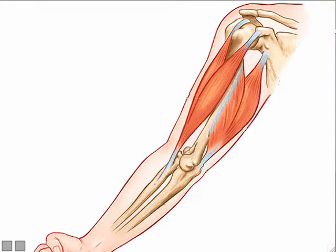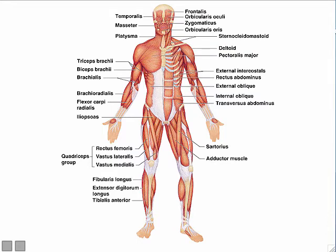In your anatomy class, you learned the names of lots of muscles — all of those are skeletal muscles: triceps, biceps, brachialis, pectoralis major, deltoids, frontalis, masseter, quadriceps, gastrocnemius — all skeletal muscles. Another thing about skeletal muscles is they are voluntary muscles, meaning you consciously choose when they contract and relax. Skeletal muscles are the only type that are voluntary. Smooth muscle and cardiac muscle are not voluntary — you do not consciously control when those contract or relax.